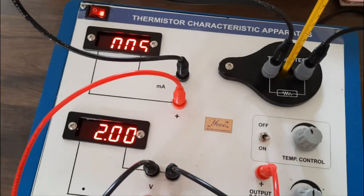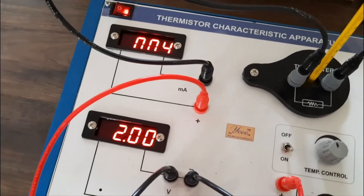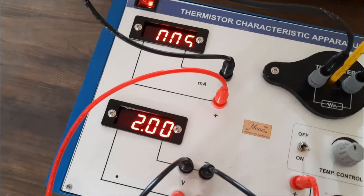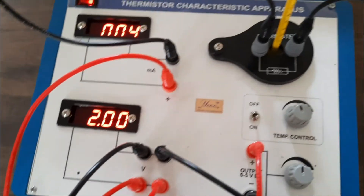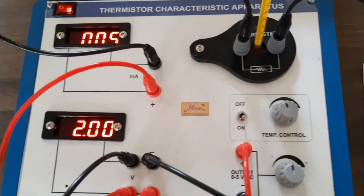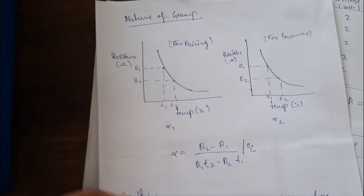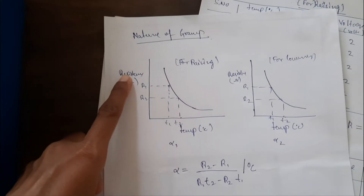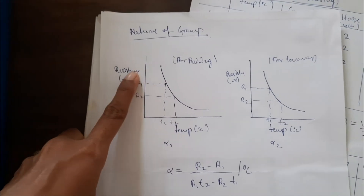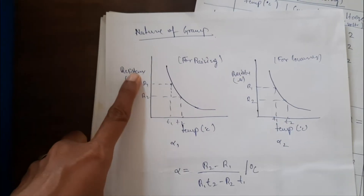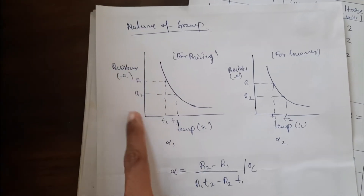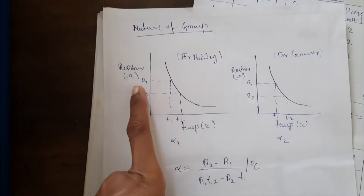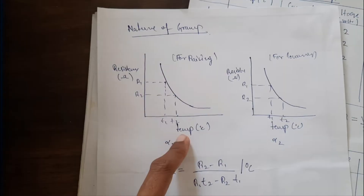Once you have calculated the resistance across the thermistor, plot a graph of temperature versus resistance. You will get separate curves for rising and lowering temperature. The resulting shape is an exponential curve of resistance versus temperature.